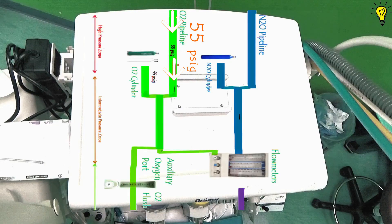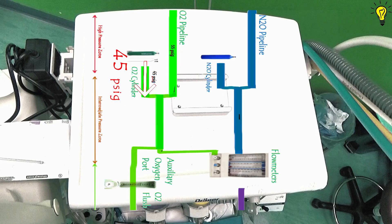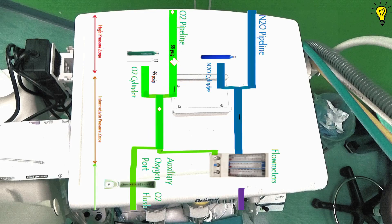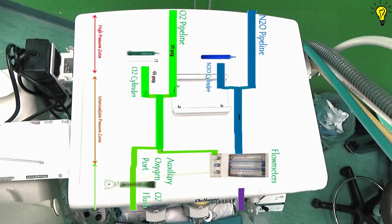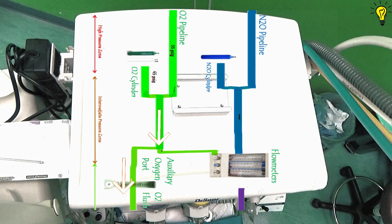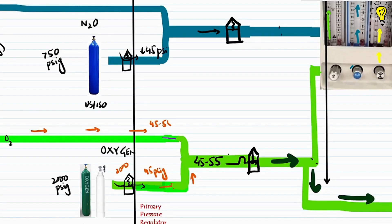Looking at the machine from above, let's integrate our flowchart. The pipeline pressure comes in at 55 psig and the cylinder pressure at 45 psig, so the machine will principally utilize the pipeline pressure unless it falls below 45 psig. The green colored oxygen, before going towards the low pressure zone, gives a bypass outlet for the auxiliary oxygen port and the oxygen flush system, as discussed already.